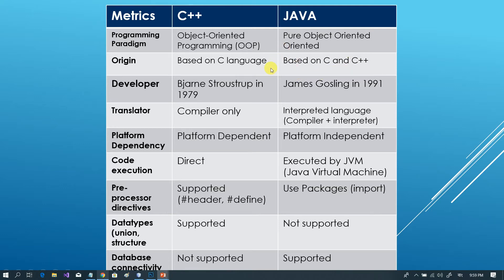First, C++ is an object oriented programming language. Java is a pure object oriented language. A pure object oriented language has four pillars: inheritance, polymorphism, abstraction, and encapsulation.